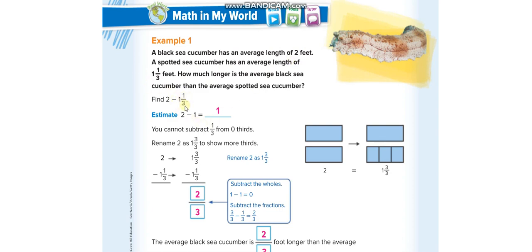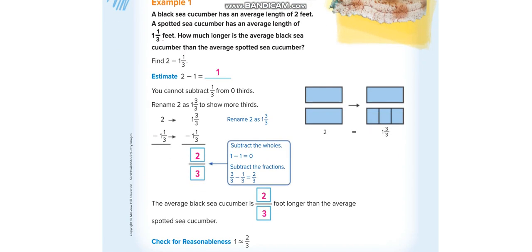We have to subtract 1 whole 1/3 from 2. First of all, we have to convert this 2 into a mixed number because this is a mixed number. We can minus the whole number 1 from this 2, but to minus the fraction we must need a fraction here. So we will change this 2. Let me show you by writing here on the side.